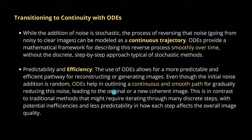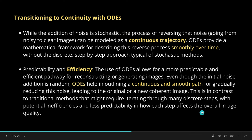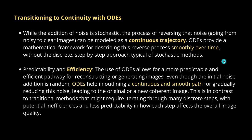This is in stark contrast to traditional methods that might require iterating through many discrete steps with potential inefficiencies and less predictability in how each step affects overall image quality. We want to smoothen things out. But there is a critical point: does the structure of the data and the structure of the mathematical space we build have smooth properties to operate in, or does it have instabilities?